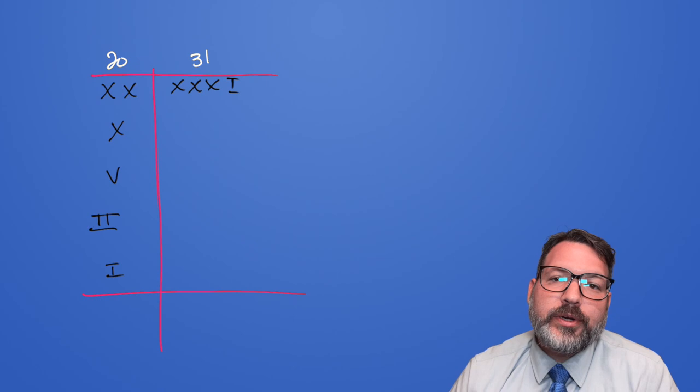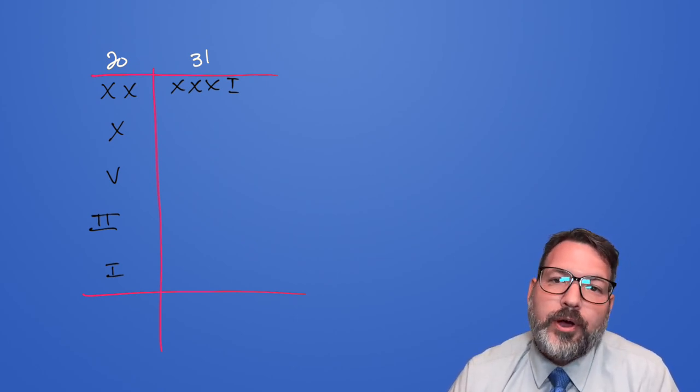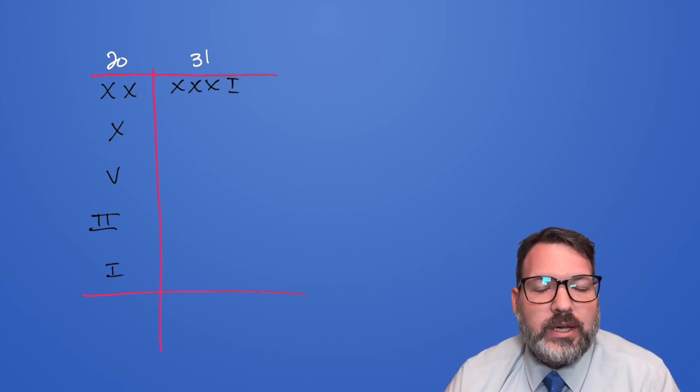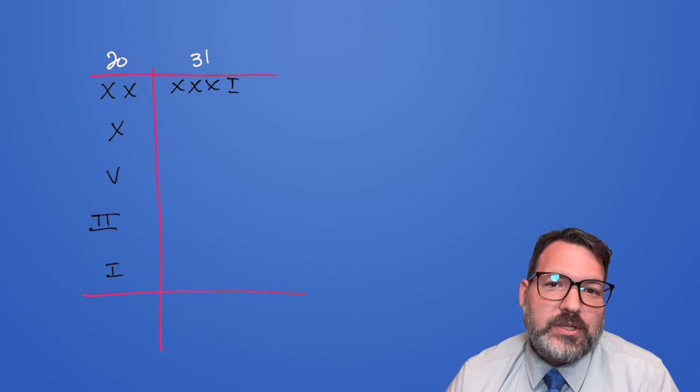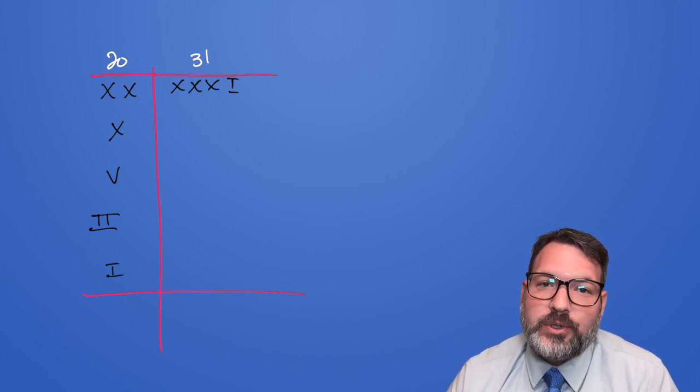On the right side of the table now, we're going to double everything, going all the way down, matching up row for row, whatever we did on the left side. So taking XXXI, we're going to double that. Fortunately, doubling is relatively easy, because we just need to use every symbol twice, making sure to convert to larger symbols whenever we can.